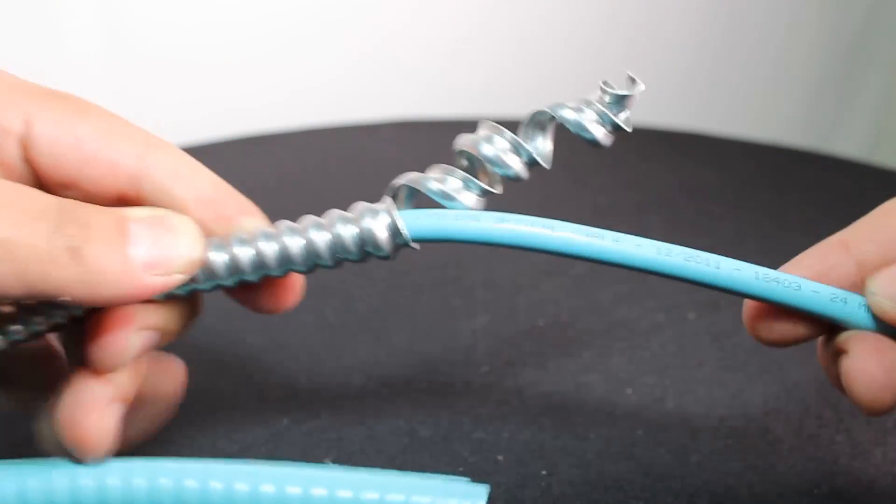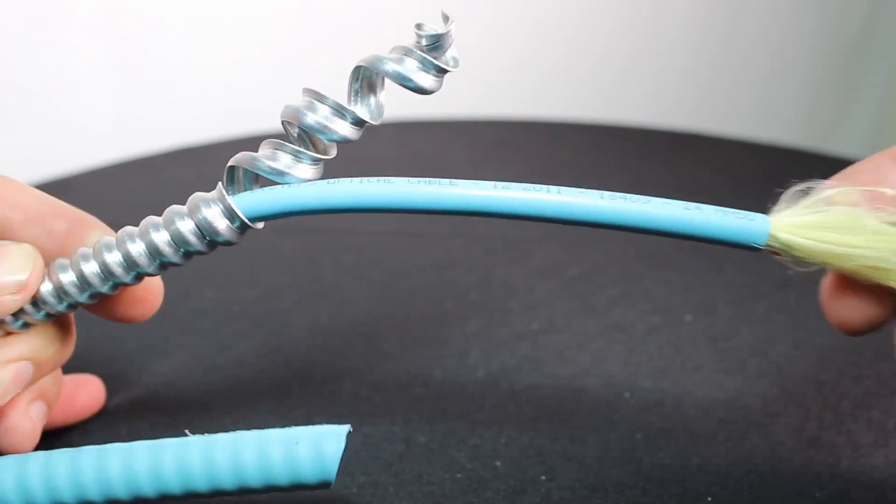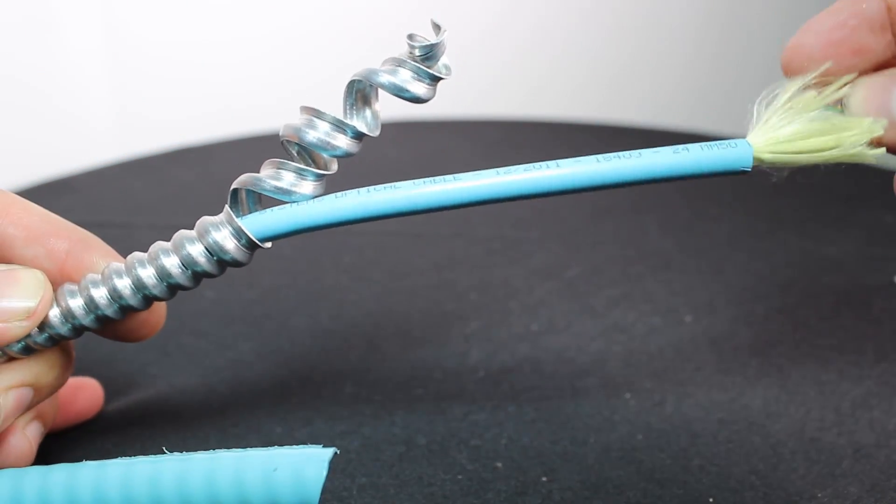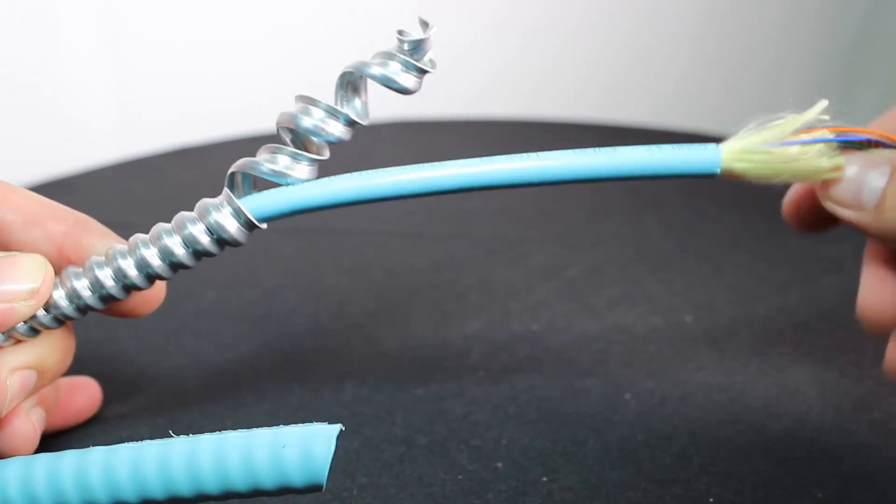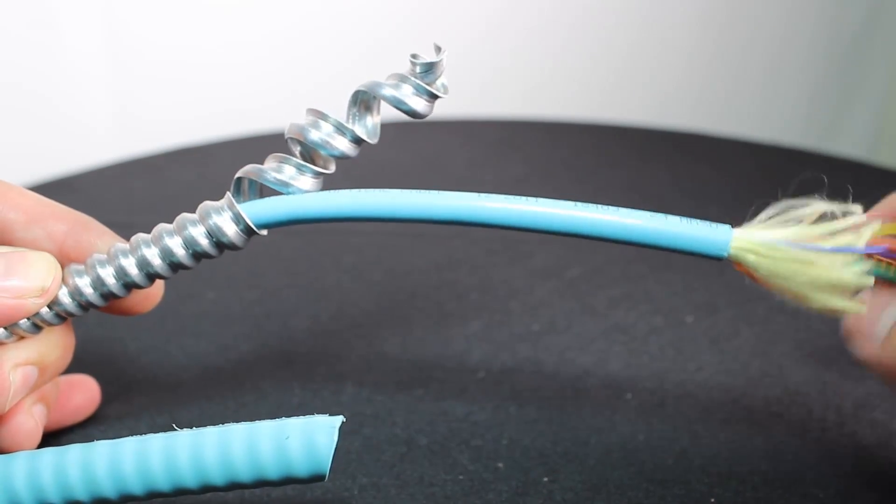Now the cable itself inside of it, this is going to be a tight buffered construction and it is very flexible. It is a lot more flexible than the outside plant cable.